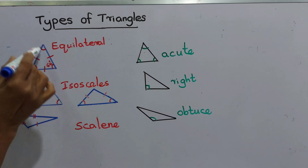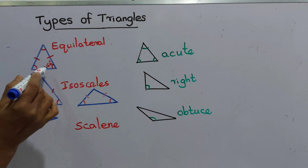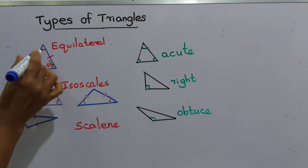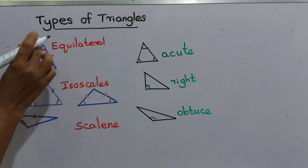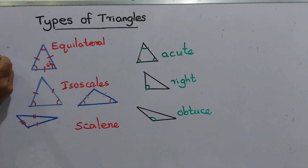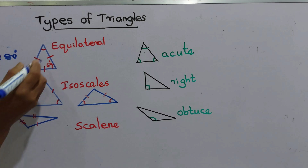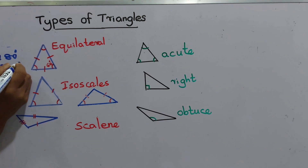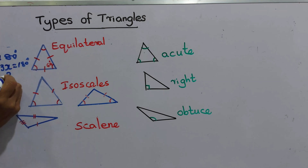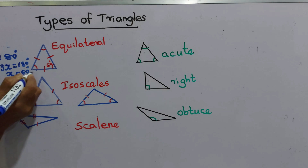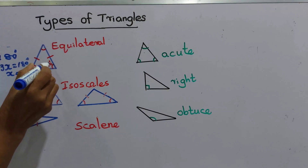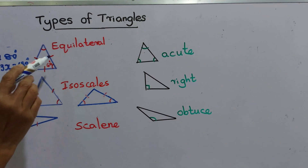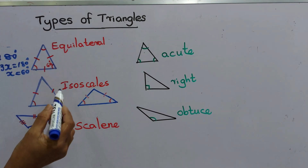In an equilateral triangle, there are three sides and the length of all three sides are equal. All three corners are equal as well. We know the value of the three angles of a triangle is 180 degrees, so all three angles are equal — that means three times x equals 180 degrees, giving each angle a value of 60 degrees.